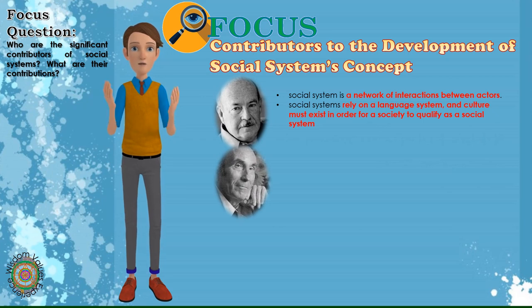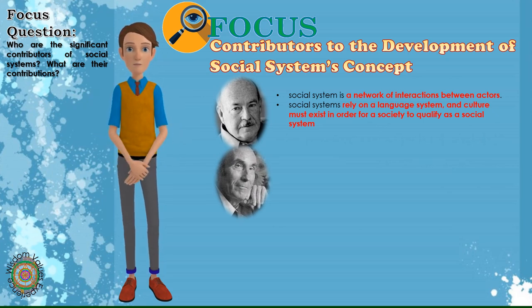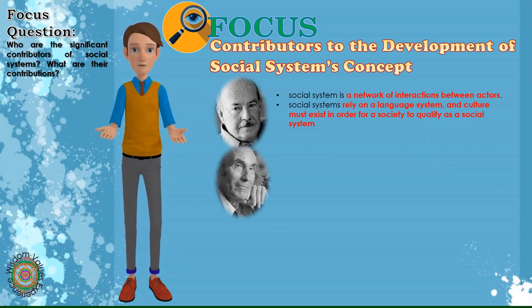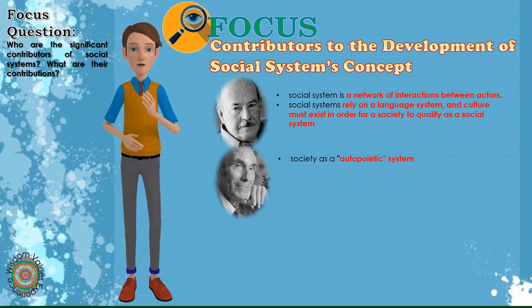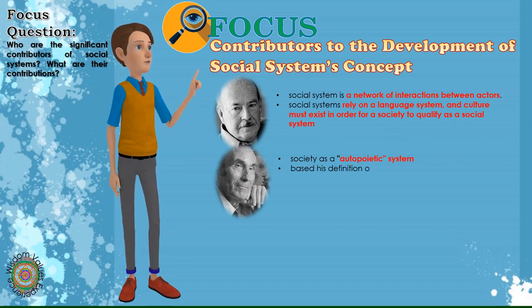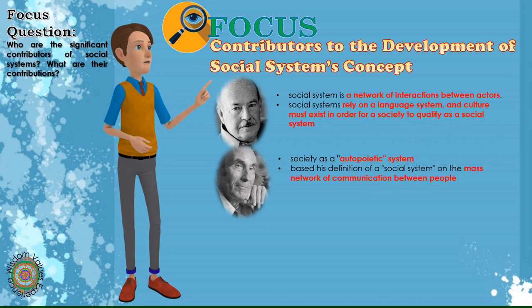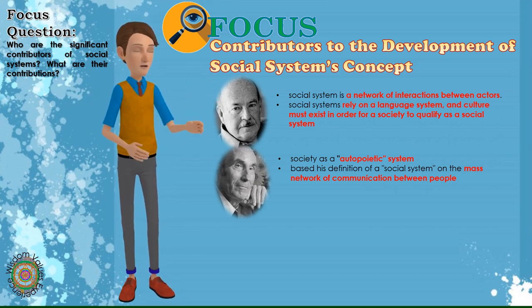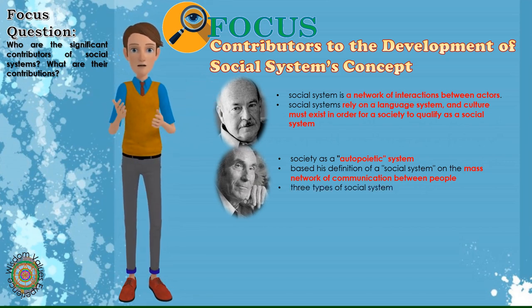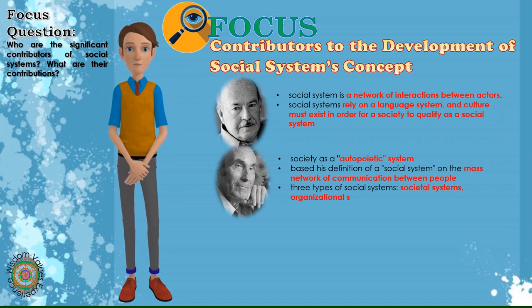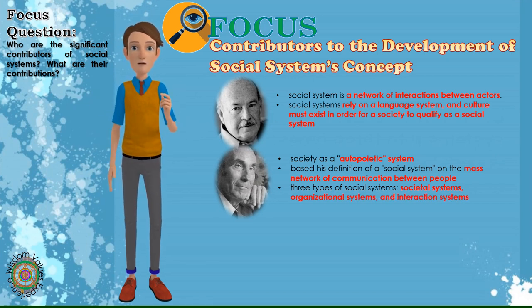Nicholas Lumen was a well-known sociologist and social systems theorist who helped lay the groundwork for modern social system theory. He defined society as an autopoietic system, meaning a self-referential and self-reliant system distinct from its environment, and based his definition of a social system on the mass network of communication between people. Lumen classified social systems into three types: societal systems, organizational systems, and interaction systems.